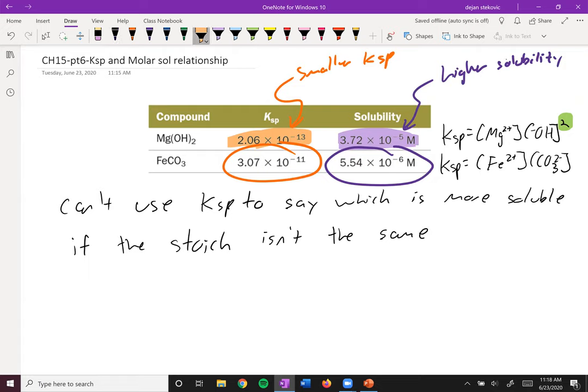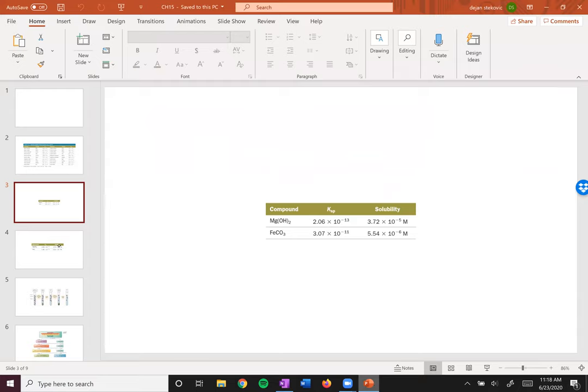Right. Magnesium hydroxide splits up into three things, has three products. Whereas iron carbonate only has two products. The stoichiometry is not the same.